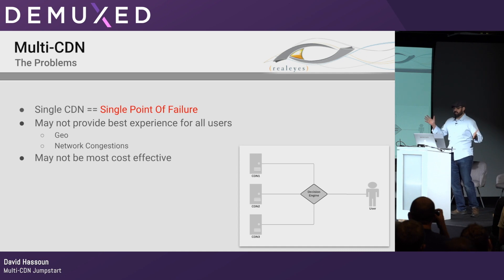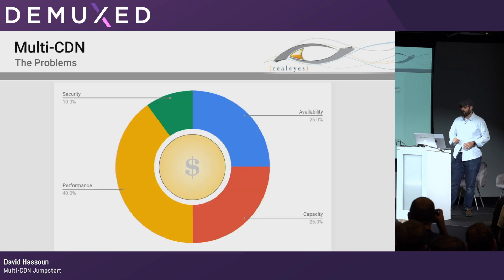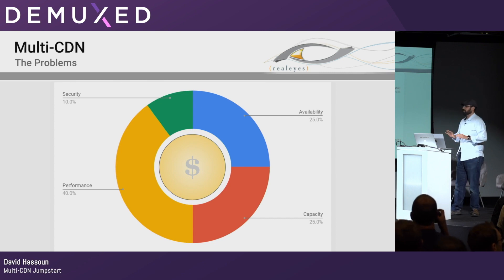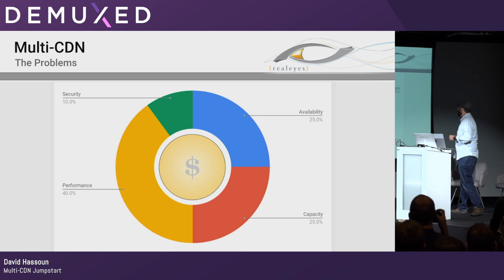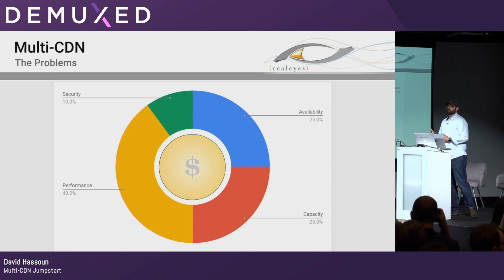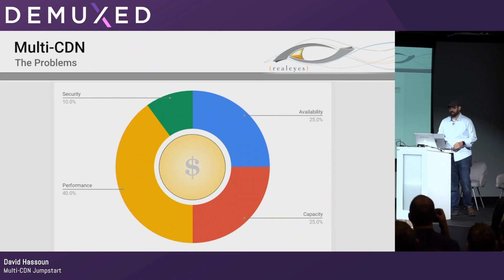At the bare minimum, the concept of multi-CDN is that you have users, there's some kind of decision engine, and you have multiple CDNs — it really needs to be that simple. When we look at what the problem is, these numbers are completely arbitrary and depend on your needs and requirements. The big portion of why you want to do this is performance — to give the best experience to your users — but there's also capacity, availability, security, and cost.